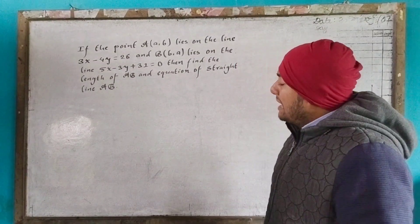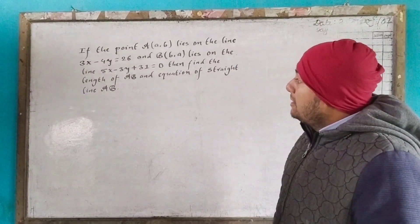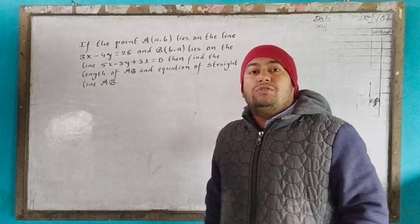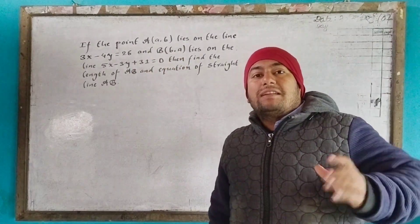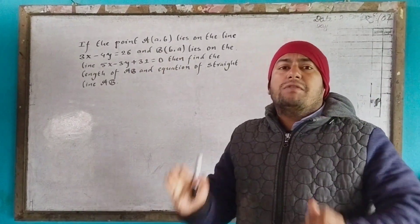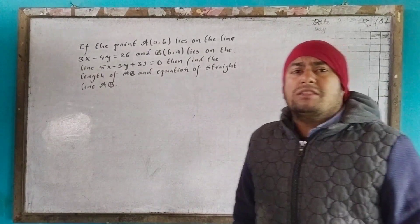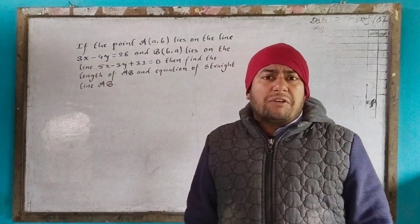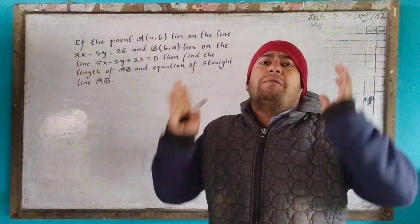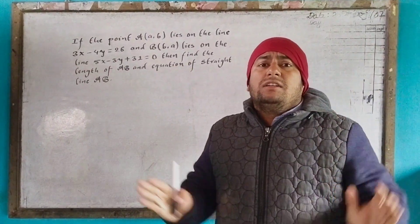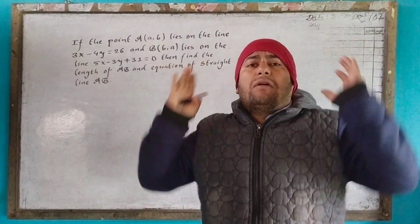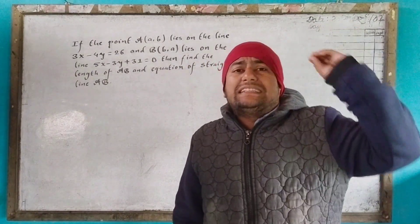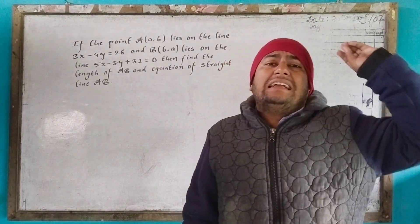Now, in this situation, A and B are points and each equation lies on the respective line. So what is the difference between these points? These two points on the straight line make the difference.